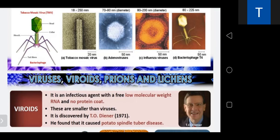Viroids are infectious agents with a free, low-molecular-weight RNA and no protein coat — they are called satellite RNA. They are even smaller than viruses. T.O. Diener in 1971 discovered a new infectious agent smaller than a virus that causes potato spindle tuber disease and citrus exocortis disease. Viroids have small circular RNA similar to viruses but are located inside the protein coat of a true virus. Viroids require the assistance of a virus for their replication, and are free RNA devoid of a protein coat.